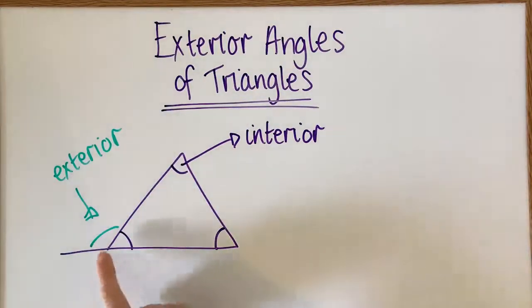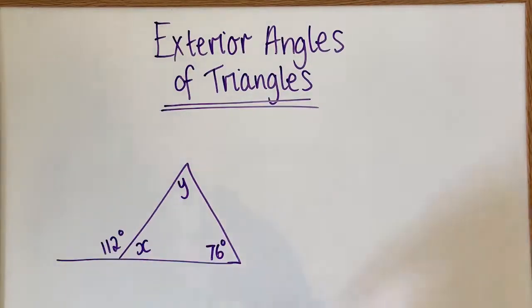Today we're going to be solving problems involving exterior angles. For this question, we've got two unknown angles: X and Y. There's a few different ways that we can work these out.